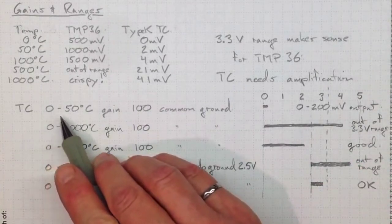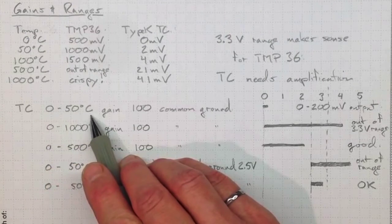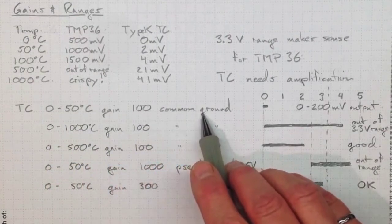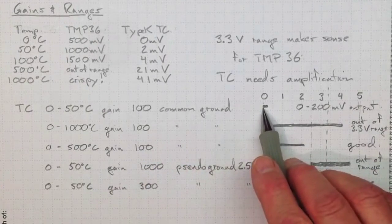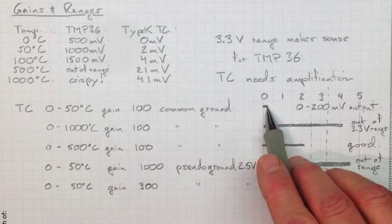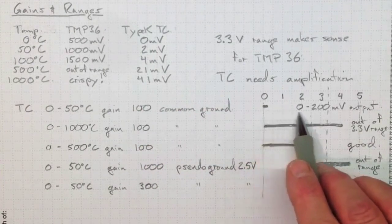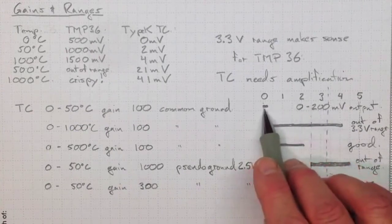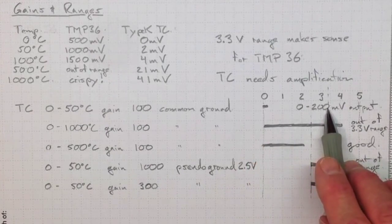If we were only interested in the zero to fifty degrees Celsius range and we used a gain of a hundred on our amplifier with a common ground, we'd go from zero up to about 200 millivolts. That's really not using very much of that zero to 3.3 volt range. That'll give us poor resolution.